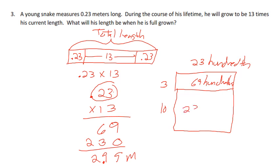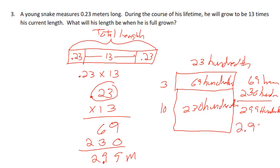And 10 times 23 will be 230 hundredths. When I add 69 hundredths plus 230 hundredths, I'm going to get 299 hundredths. Well, I know when I rewrite 299 hundredths it's going to be 2.99 because the last nine has to be in the hundredth spot.